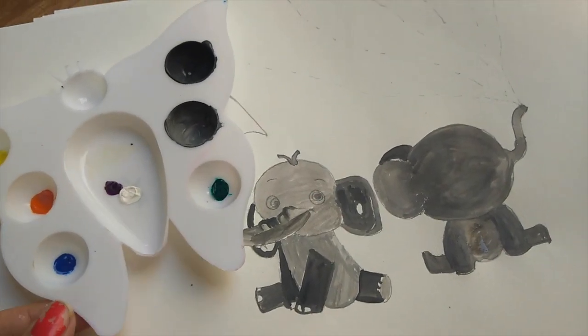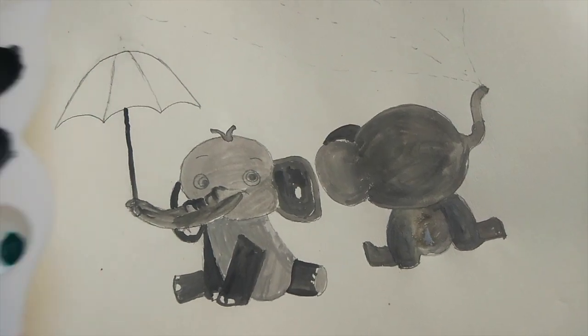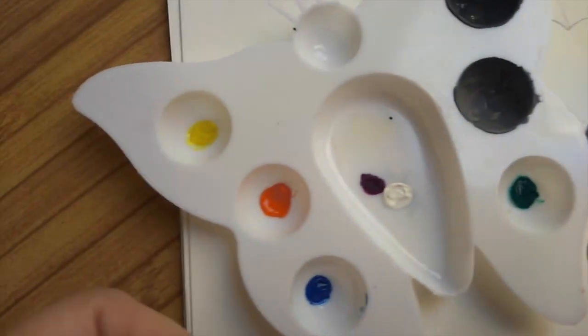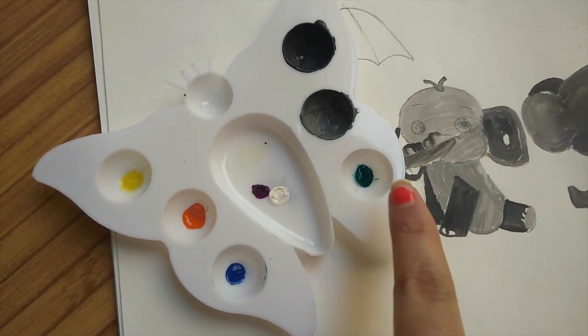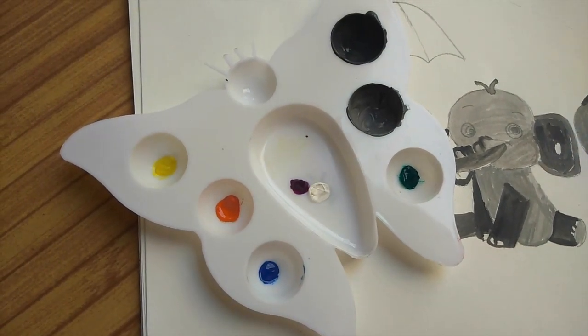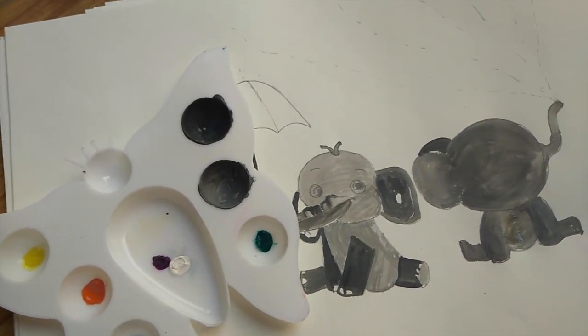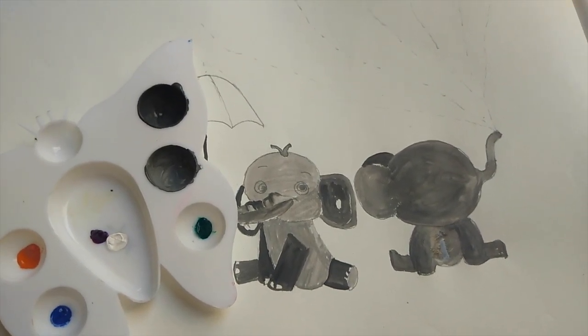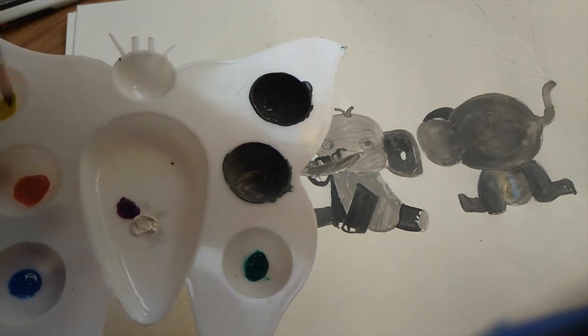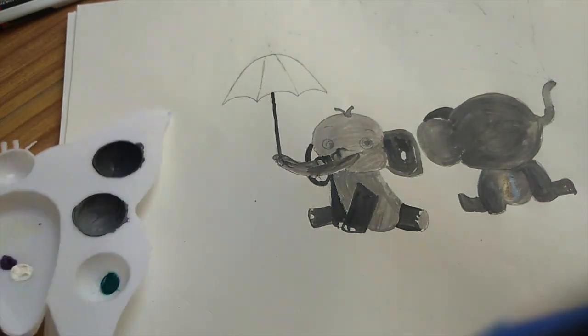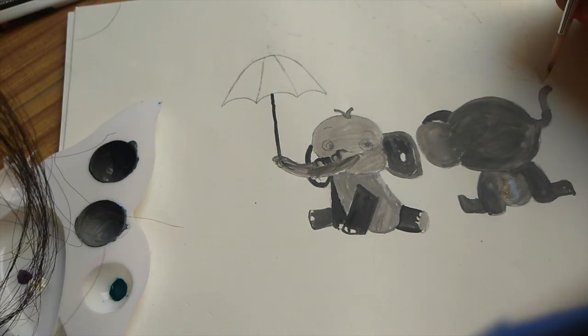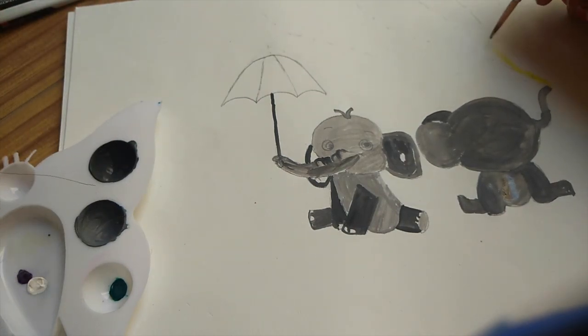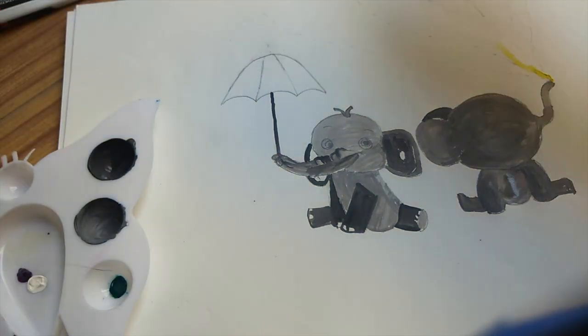Done with gray color. Next we will be doing the rainbow colors. I'm using yellow, orange, blue, green, and purple mixed with white. You can use whatever color you want to use. So let's start the rainbow. Use your creativity. Let's see where all did the yellow go.